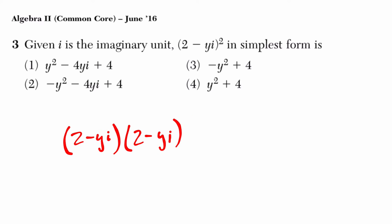And then we have 2 times 2, which is 4. 2 times negative 2y, and then again here. That's negative 2yi twice,